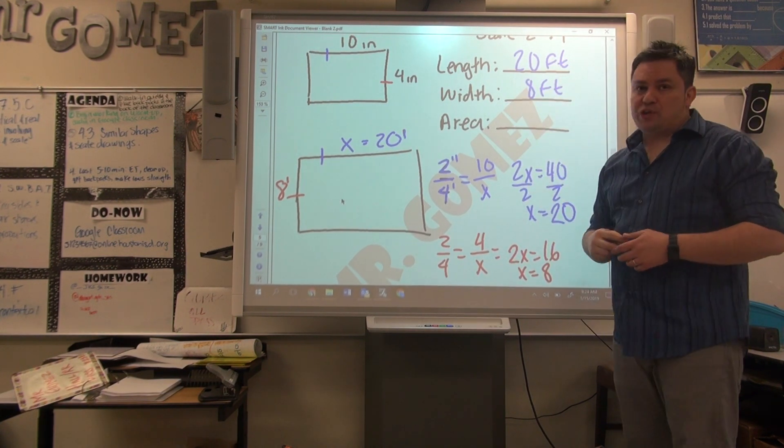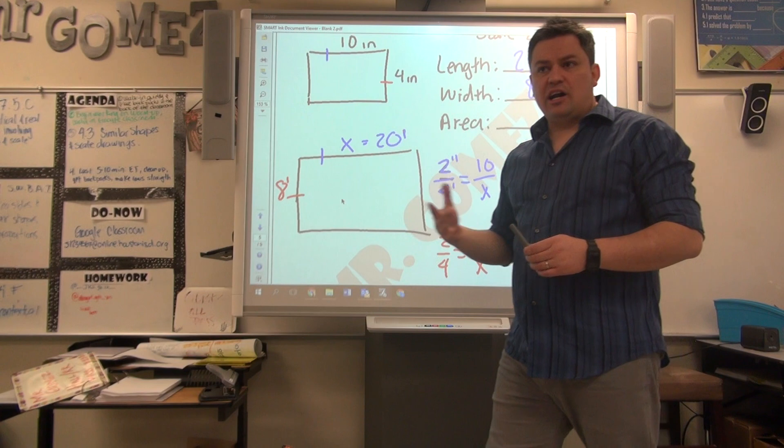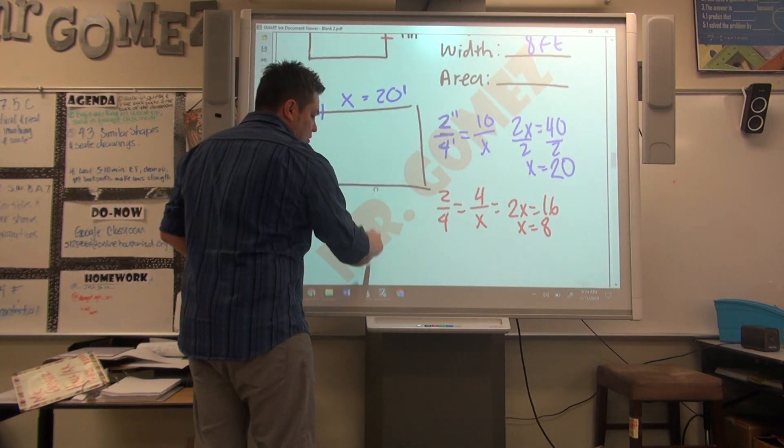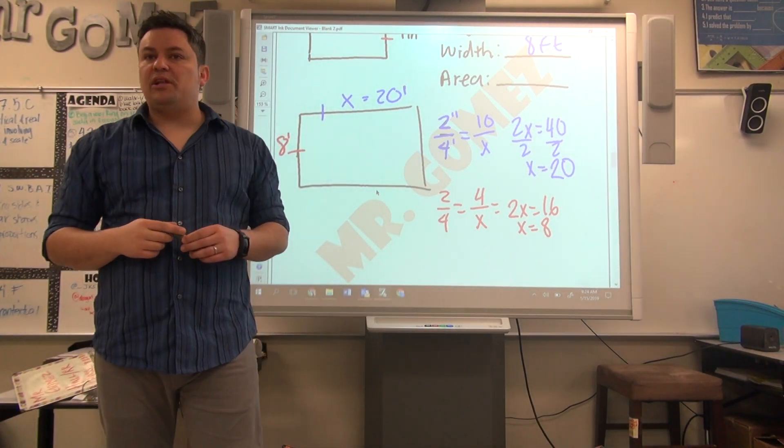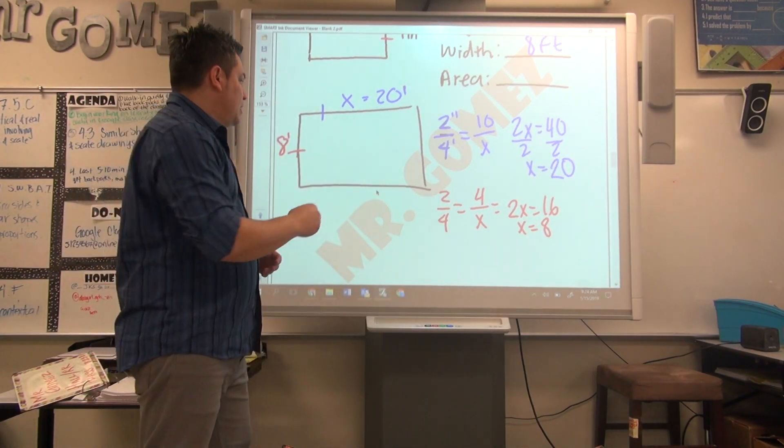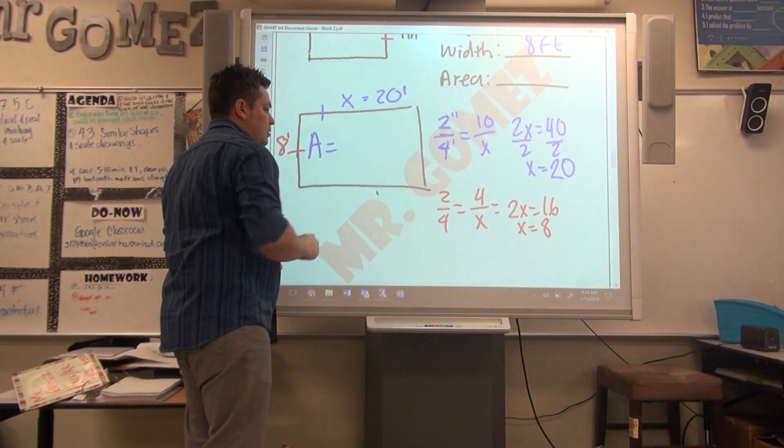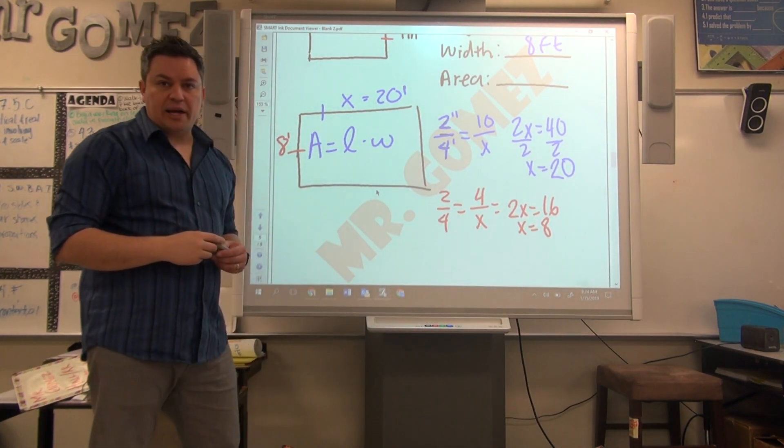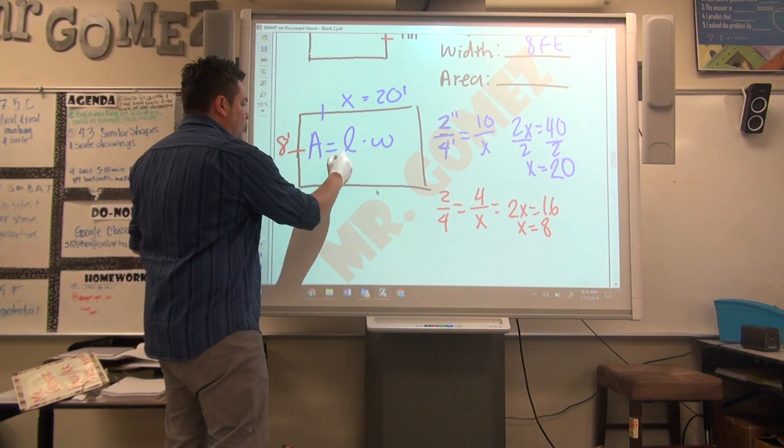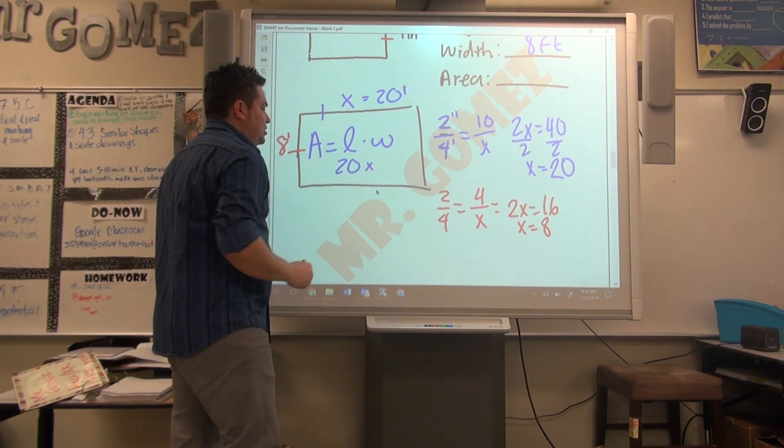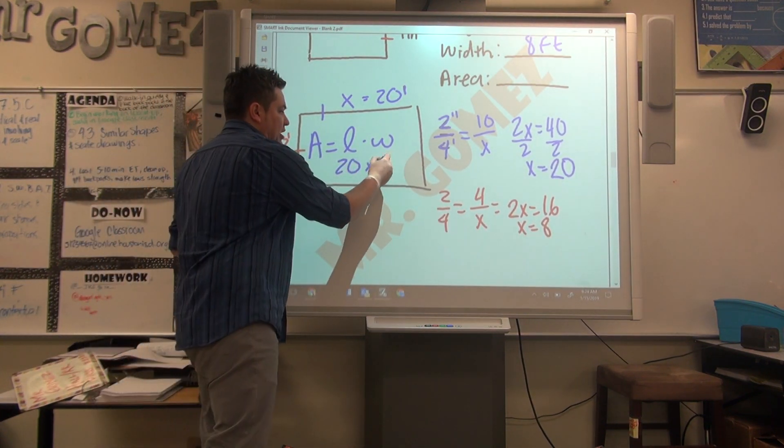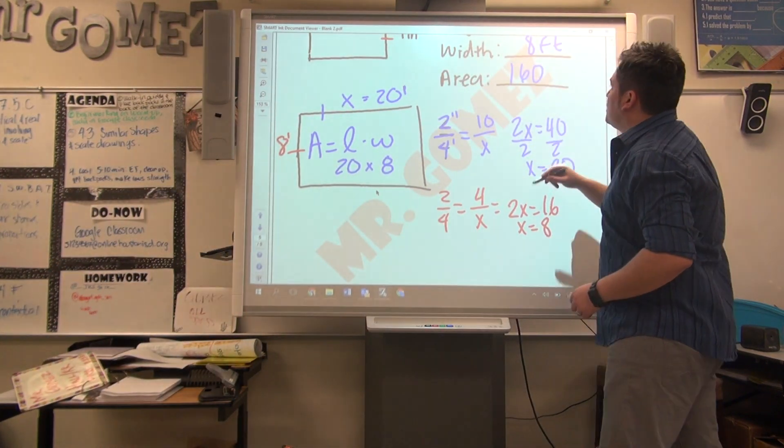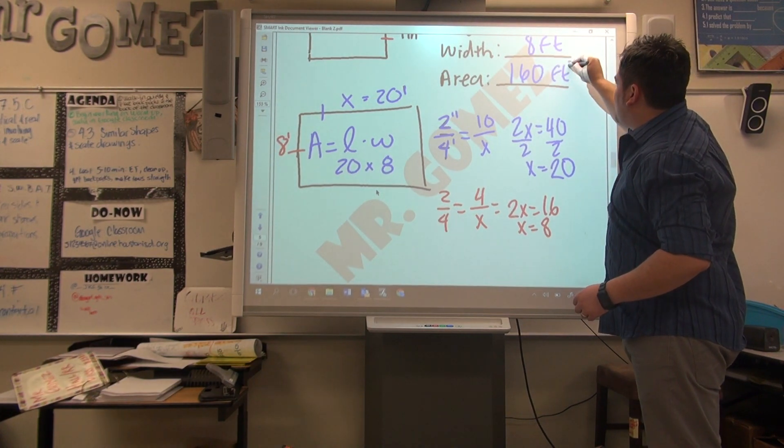What is the actual length? 20 feet. What is the new width? 8 feet. Now they're asking for the area. How do you find the area of a rectangle? The formula is length times width. So length is 20 times 8, what do you get? 160. So the area is 160 square feet.